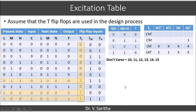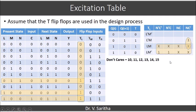Now getting the expression for TL: you can first fill the don't care cases in the positions of 10, 11, 12, 13, 14, 15 in the K-map. You can observe that TL is 1 when the LMN and C value corresponds to 6, 8, and 9. Mapping goes like this, and the TL expression is obtained as L plus M·C̄.